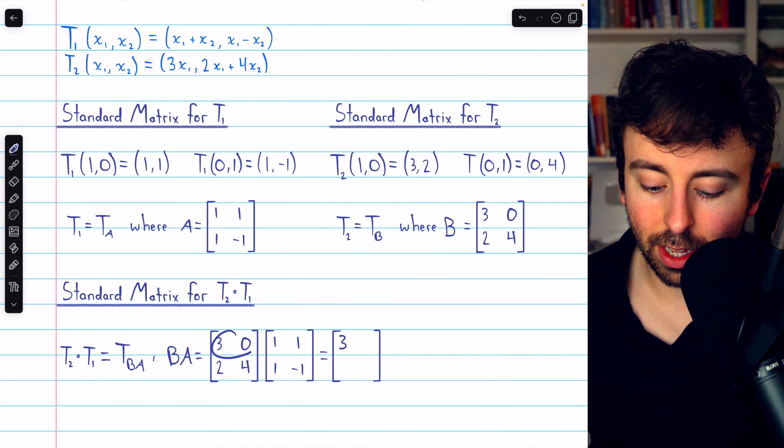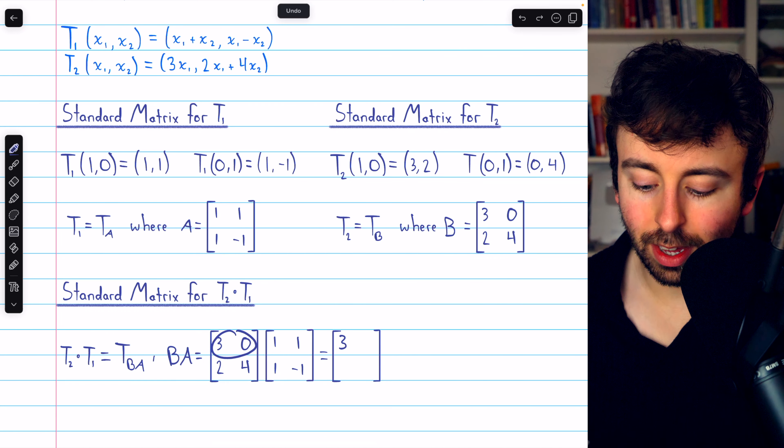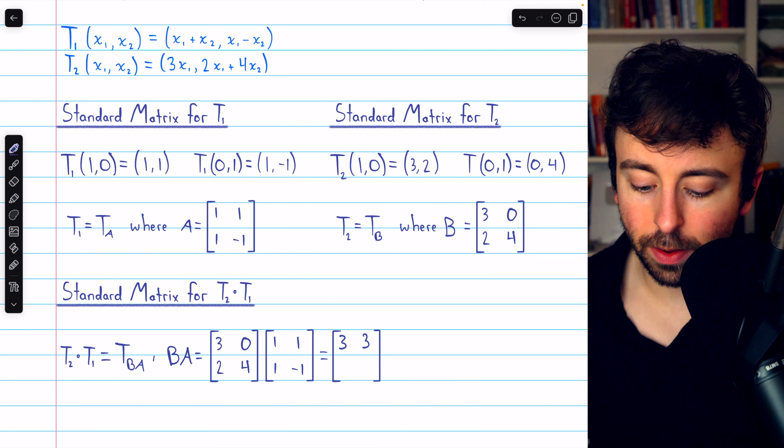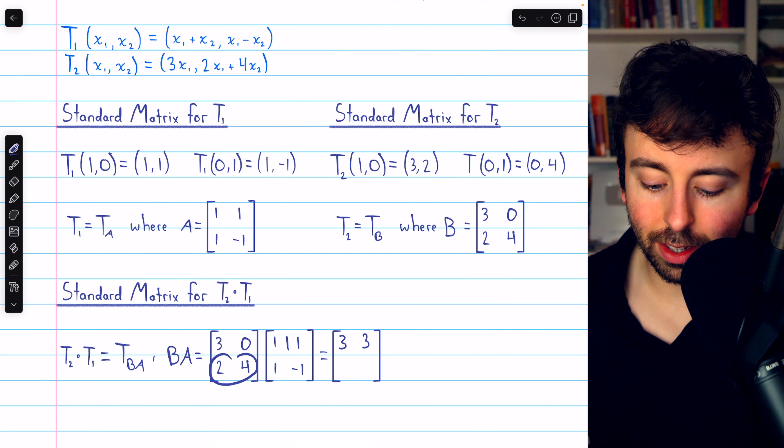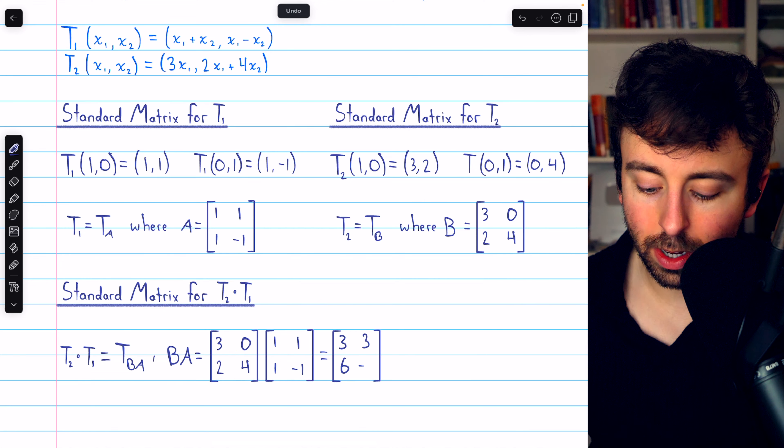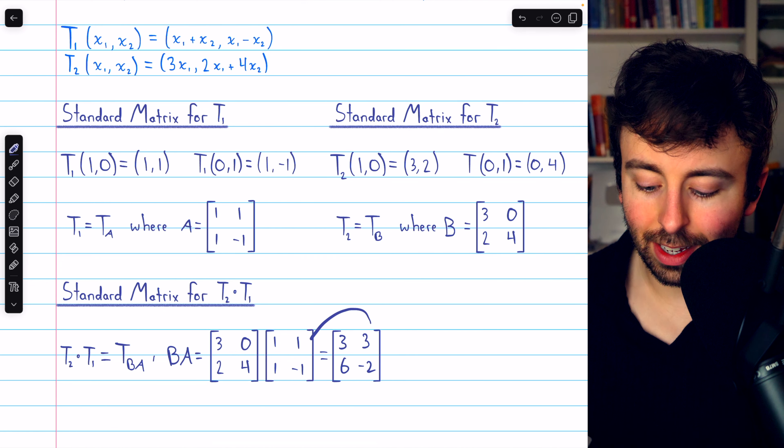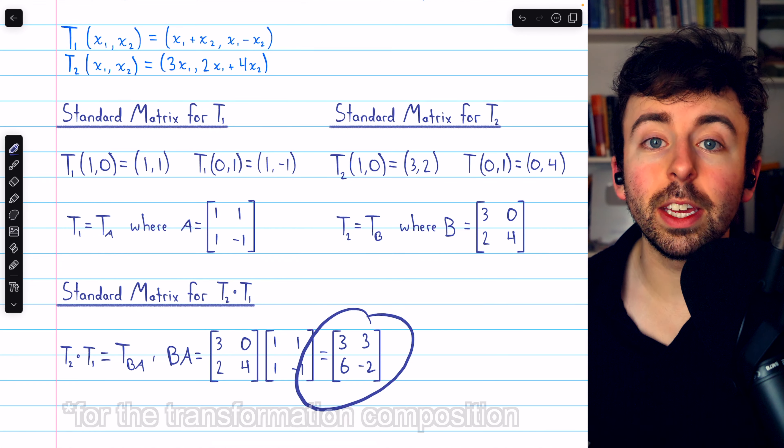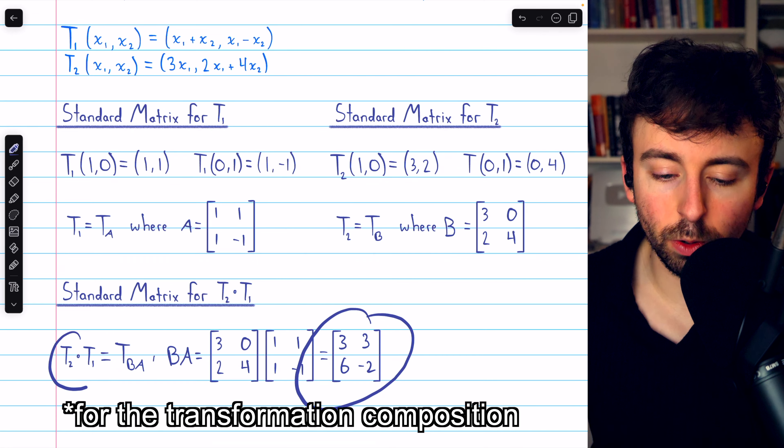Now we just carry out the multiplication. Matching this row with this column, we get an entry of 3. And then this row with this column gives us another entry of 3. Then this row with this column gives us an entry of 2 plus 4, or 6. And then this row with this column gives us 2 minus 4, so negative 2.